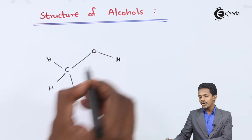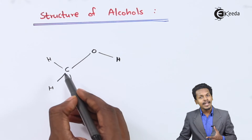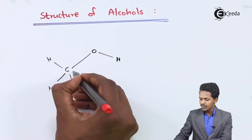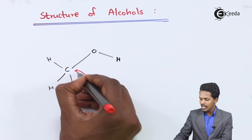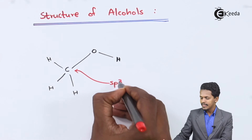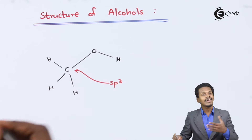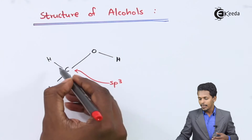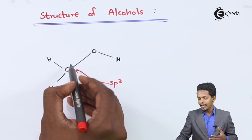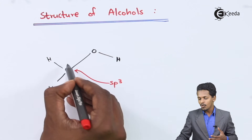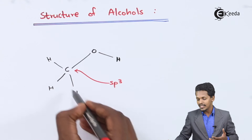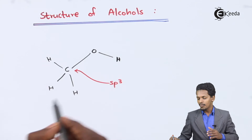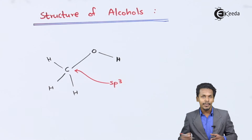This OH group is basically attached to the carbon atom, which is SP3-hybridized. As you could see, this carbon is forming a carbon-carbon single bond — suppose if it is ethane — as well as carbon-hydrogen bonds. There are three carbon-hydrogen bonds, and that is how it is SP3-hybridized.